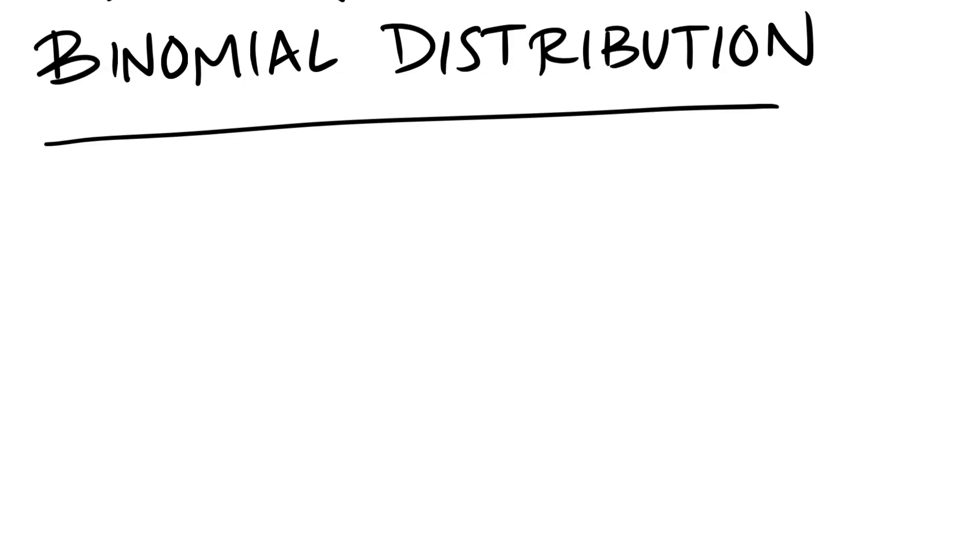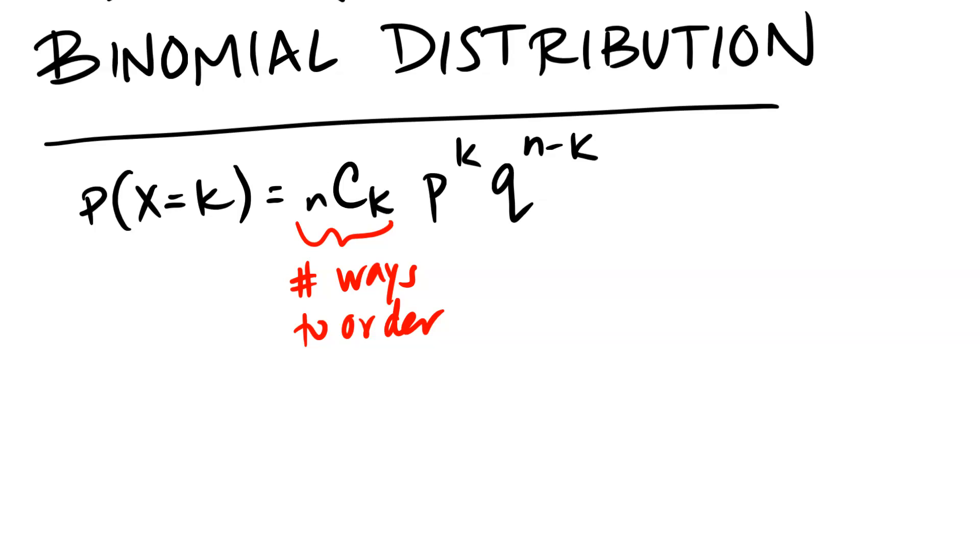You should still understand what the formula means and how it is working, right? This probability of X equals K: n choose K, P to the K, Q to the n minus K, or 1 minus P, however you want to do it. But basically we have our number of ways to order something multiplied by all of the different...